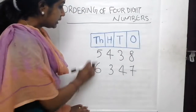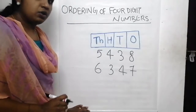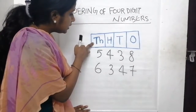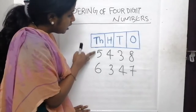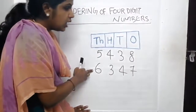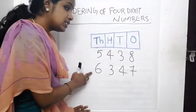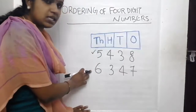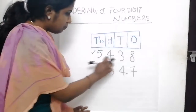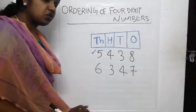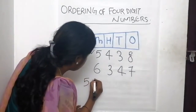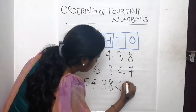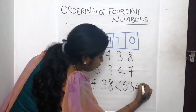We have to compare first the numbers in the thousandth place. What are the numbers in thousandth place? Look at here - this is the thousandth place. What are the numbers in the thousandth place? 5 and 6. Which number is less between 5 and 6? We know 5 is less than 6. So this number is less than this number. 5,438 is less than 6,347.